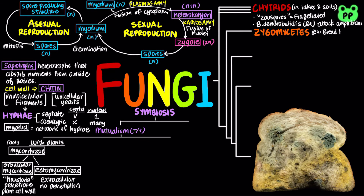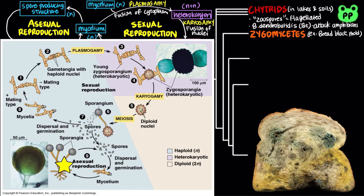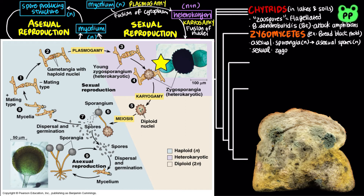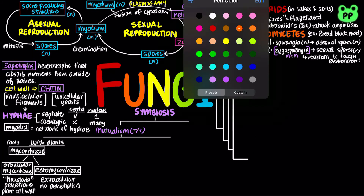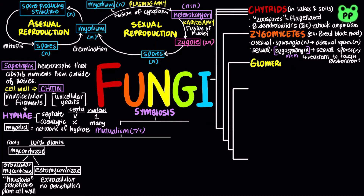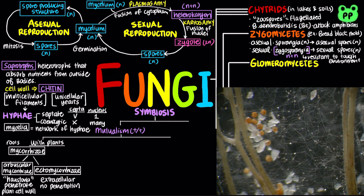Zygomycetes, which include the common bread black mold, may reproduce asexually by spore-producing sporangia, or sexually through heterokaryotic zygosporangia, which are resistant to freezing and drying and can survive unfavorable conditions. Glomeromycetes are a group of fungi known to form arbuscular mycorrhizae with 90% of plant roots through specialized hyphae known as haustoria, which penetrate plant cells.